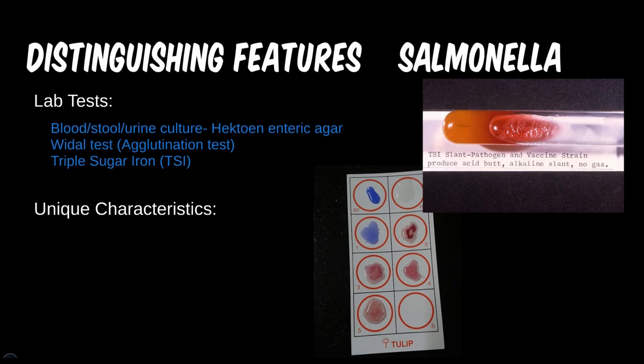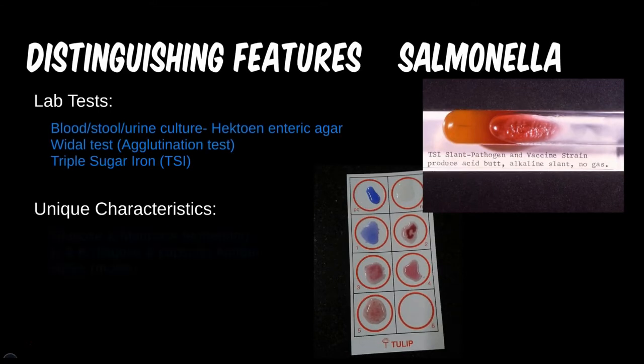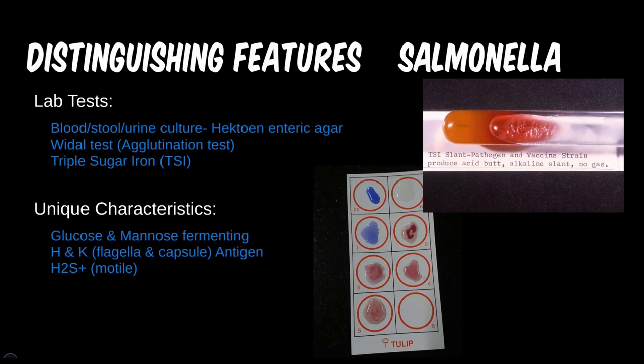The TSI slant is a specialized agar medium, but is positive in a few enteric bugs, so its usefulness varies. Often, patients recover before results for these tests come back, but severe infections might require more specialized options. Though most of the fermenting questions are not particularly high yield for medicine, they are more so for enteric microbes.